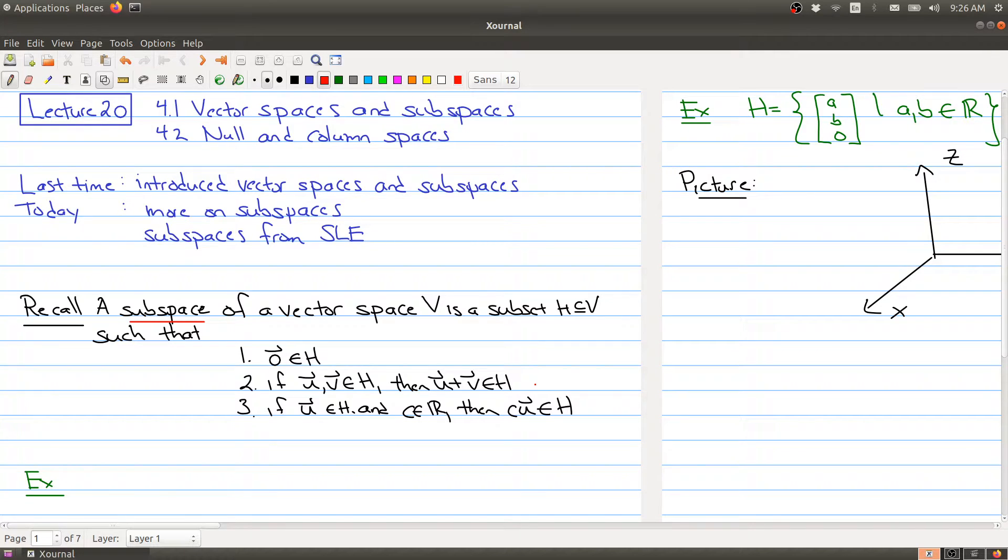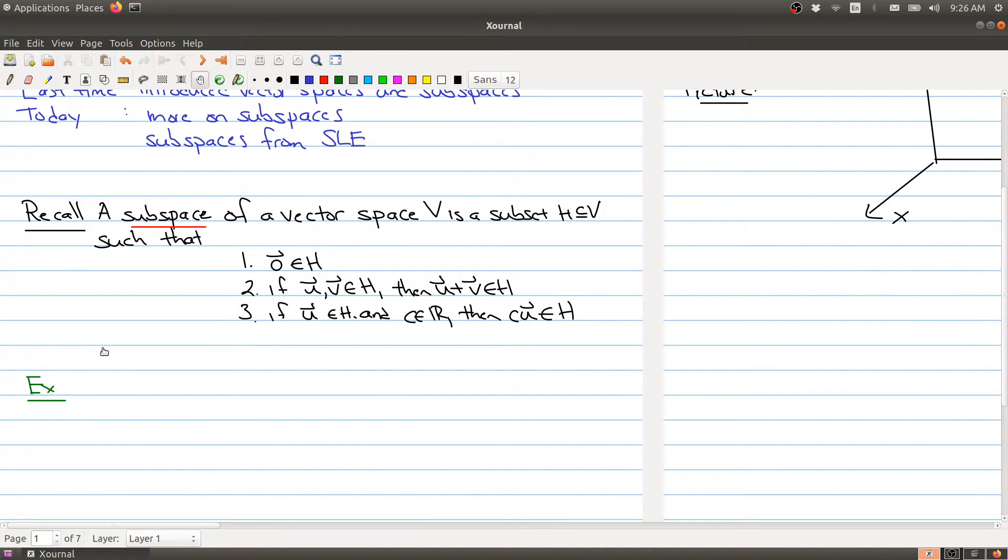Let me give you an example and we're actually going to start with a non-example just because sometimes these are a little bit more illuminating. So our non-example is that R2 is not a subspace of R3. And the reason that it's not a subspace is not because it fails these conditions here, it actually fails the initial condition that you have a subset of your vector space. Note R2 is not even a subset of R3.